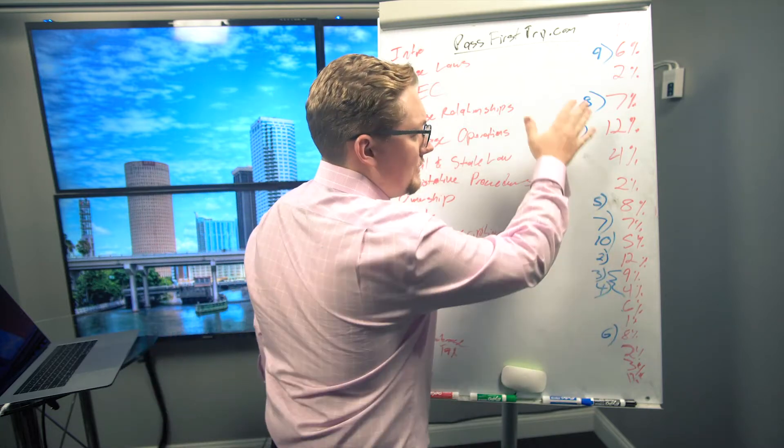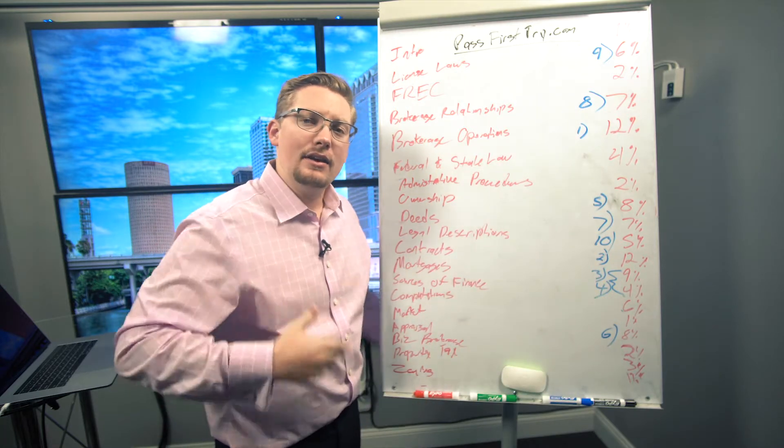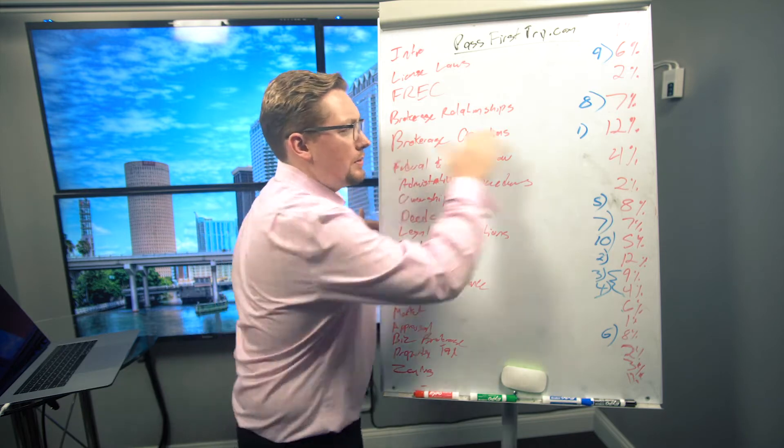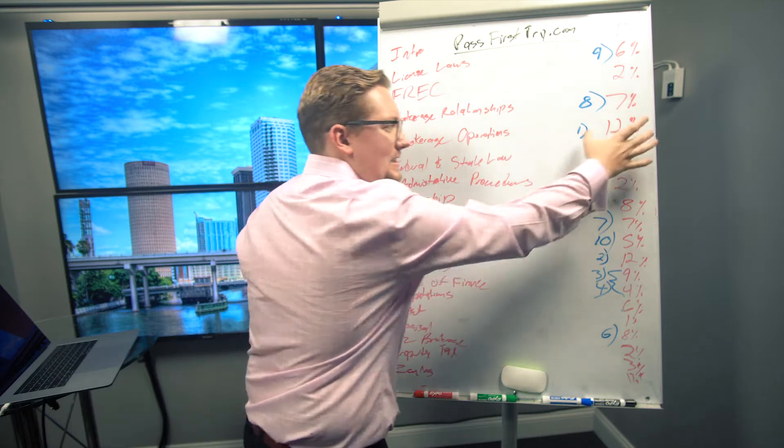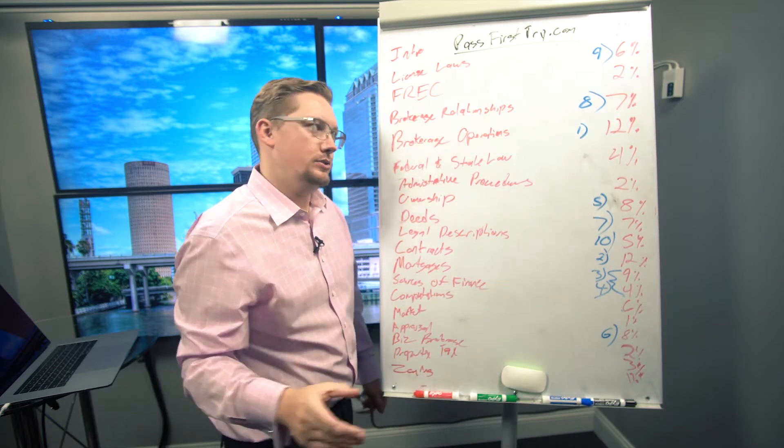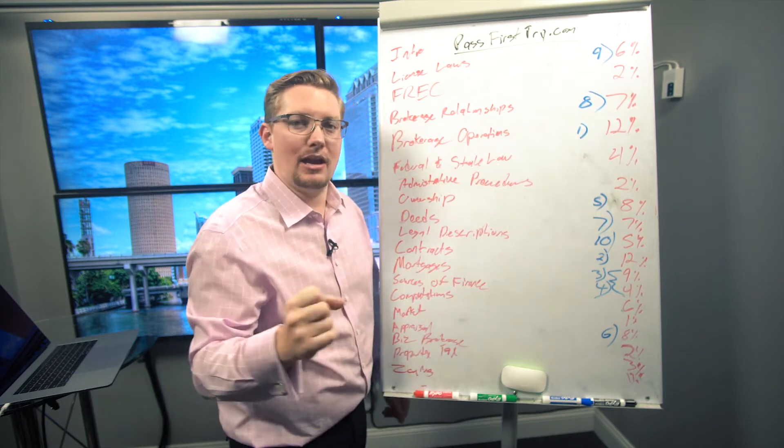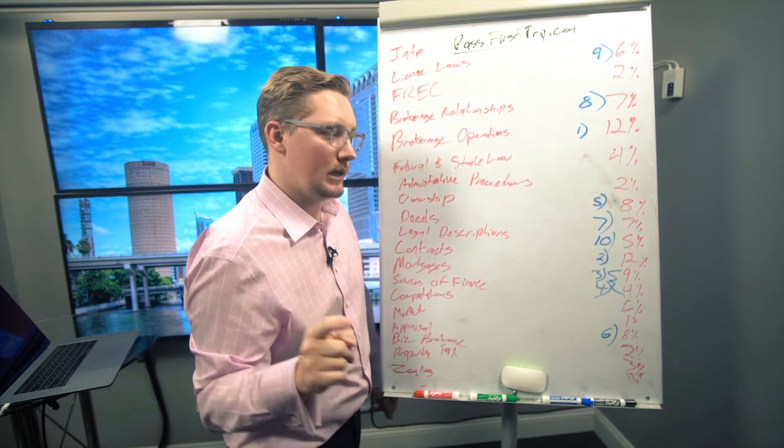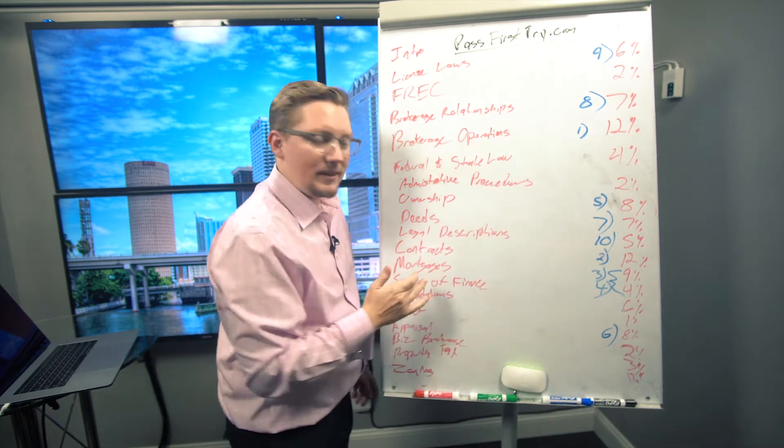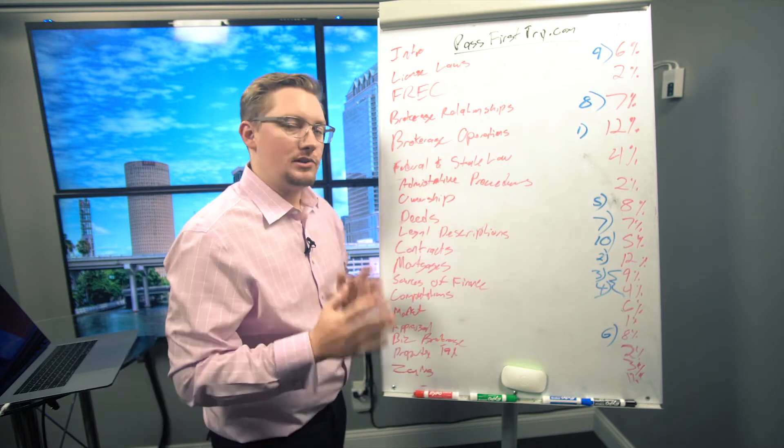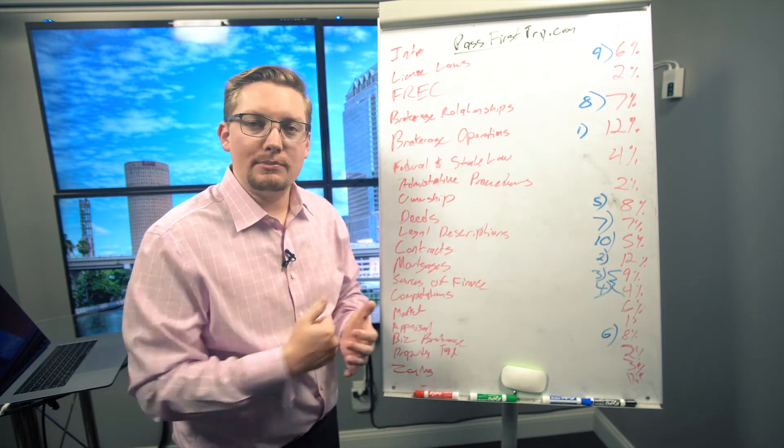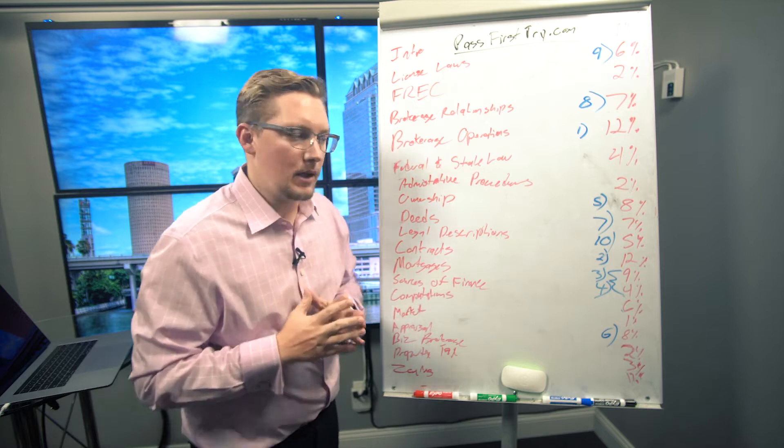What I've got numbered out here is what I would recommend you start from. Number one I've got Brokerage Operations - it's one of the longest chapters in the course and it's also one of the largest chapters, which is why you want to start here and get this chapter down, especially the stuff on escrow money. Number two on the list we've got Contracts - that's the other 12% chapter. Again, it's one of the largest chapters in the course, you want to get that down as well.